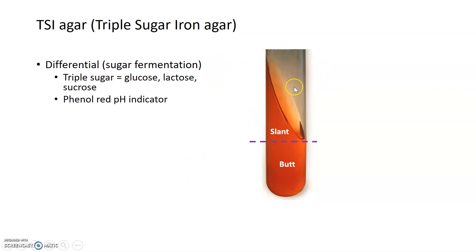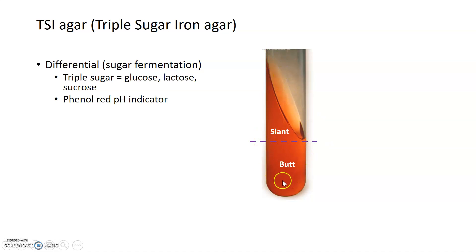A slant is a test tube filled with TSI agar that, before solidifying, is tilted to produce a diagonal slant. There are two parts: the slant above the dotted line and the butt below it. The slant is considered an aerobic environment because the media has access to oxygen within the test tube, whereas the butt is more anaerobic because it doesn't have access to that oxygen.